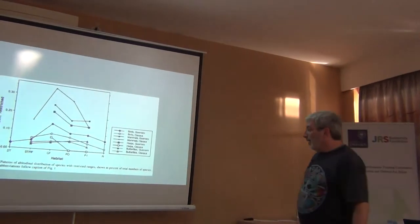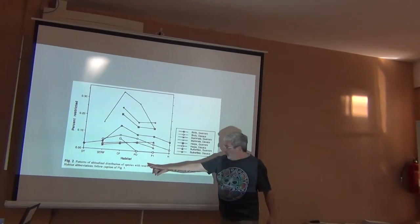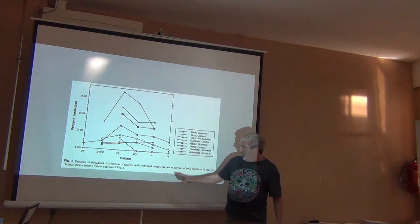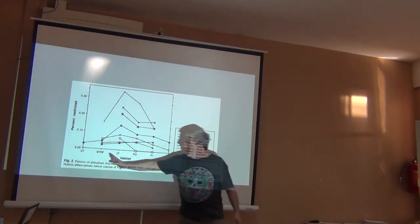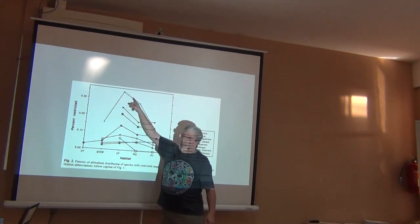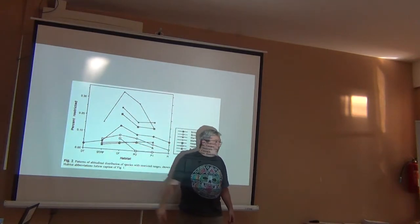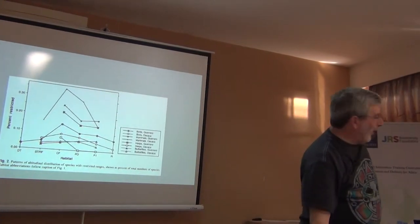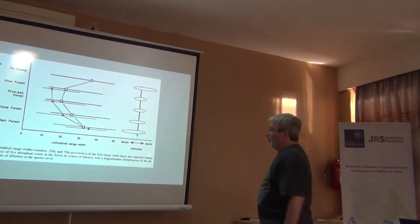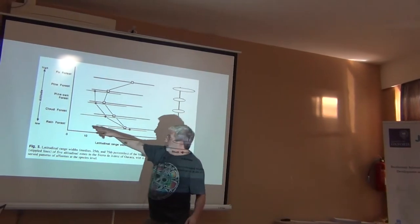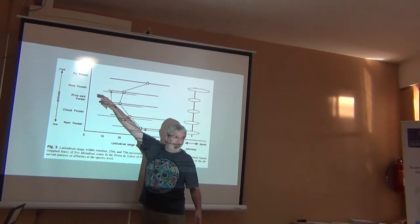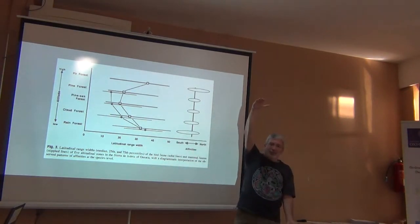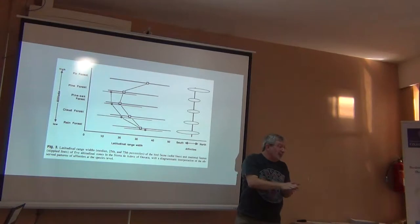We can look at the elevational distribution of species with restricted ranges. Here are the highest elevations, here are the lowest elevations, and notice that these curves peak in the middle. We also looked at range size of those species, going from lowlands to highlands, measuring the average size of a species' distribution in terms of degrees of latitude.